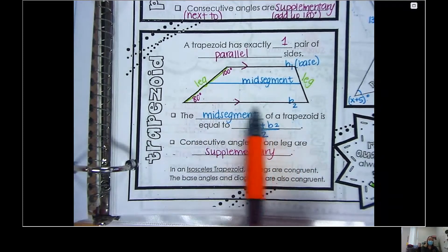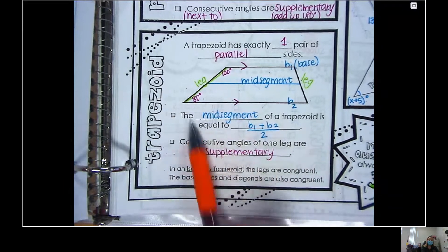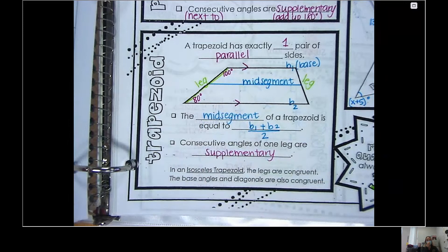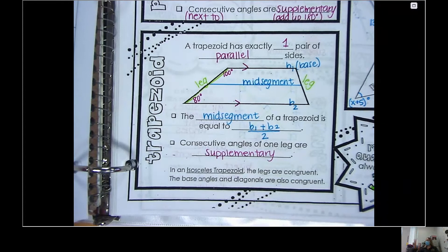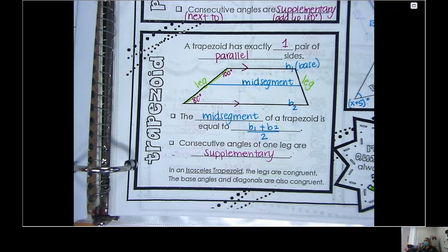The formula we're really going to be focusing on today is this one right here. The mid segment of a trapezoid is equal to base one plus base two divided by two. Now, if you take two numbers and you add them together and you divide them by two, what are you really finding?